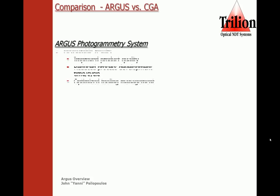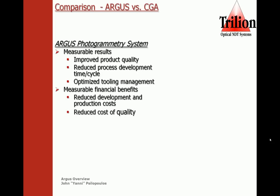Additional measurable results include improved product quality, reduced process development time and cycle, and optimized tooling management. Some of the measurable financial benefits include reduced development and production costs and reduced cost of quality.